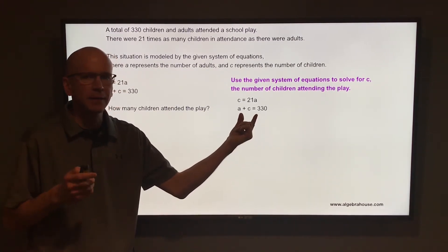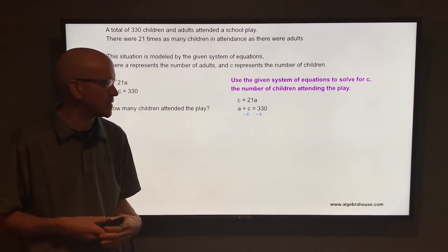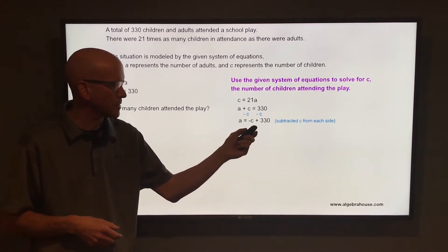So take that second equation, solve for A. Subtract C from each side. When you do that, you get A equals negative C plus 330.